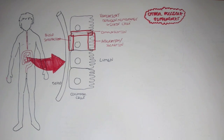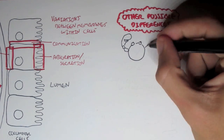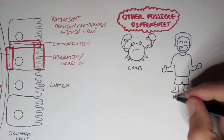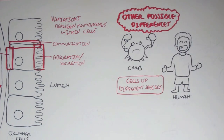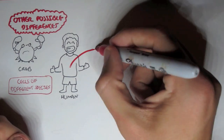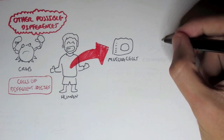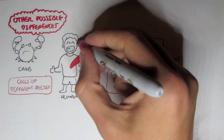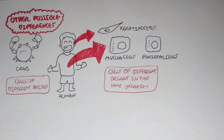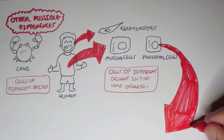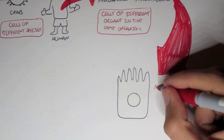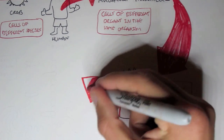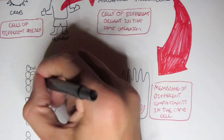What are some other possible differences between membranes within the cell? Membrane composition — the lipid or the protein — can differ between cells of different species, such as between a crab and a human. It can also differ between cells of different organs in the same organism, for example keratinocytes in the skin and mucosal cells of the gastrointestinal tract. Alternatively, membrane composition can differ between membranes of different compartments in the same cell, such as organelles. And membrane composition can differ between different domains of the same membrane.